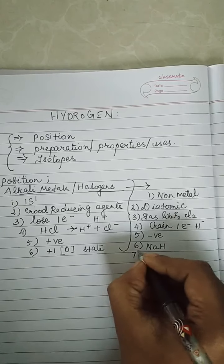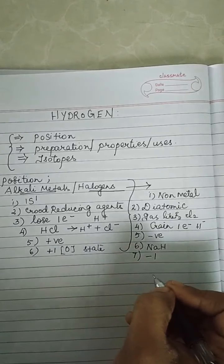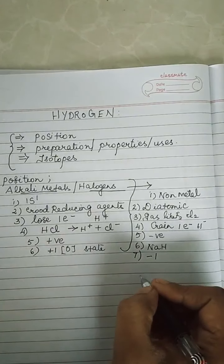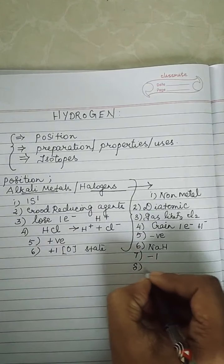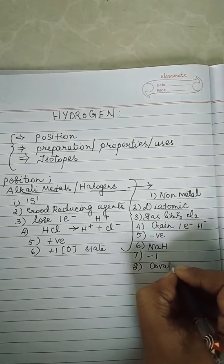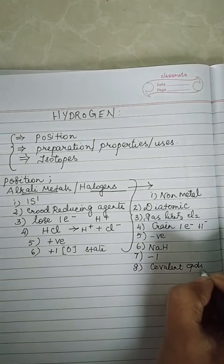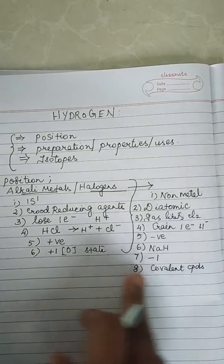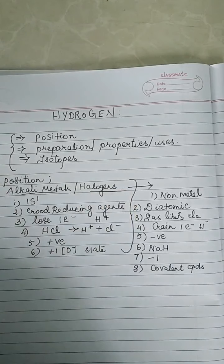It shows a −1 oxidation state and it has the ability to form covalent compounds. So these 8 properties tell us that hydrogen is similar to halogens.